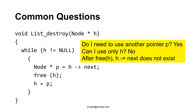The next few slides answer several frequently asked questions. The first question is whether we need two pointers p and h, or is it possible to use only one pointer. The answer is that we need two pointers. One pointer stores the address of the node that will be freed. After this node is freed, it does not have the next pointer anymore. Thus, we must store the next node before freeing the current node.